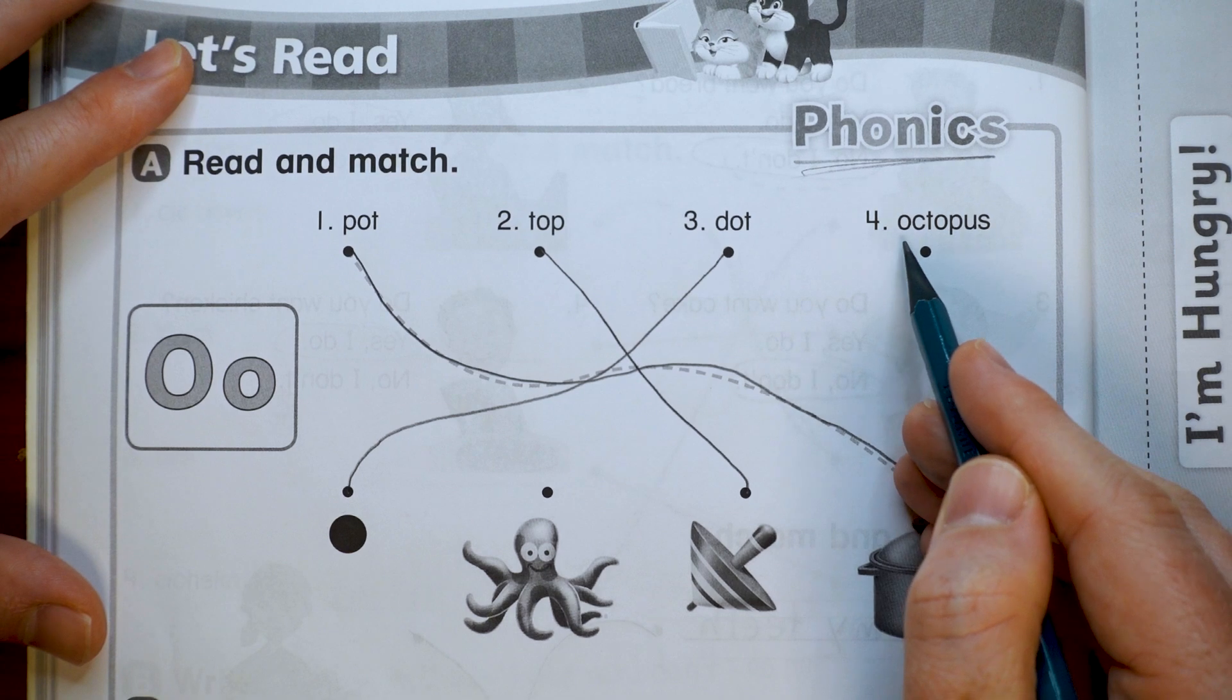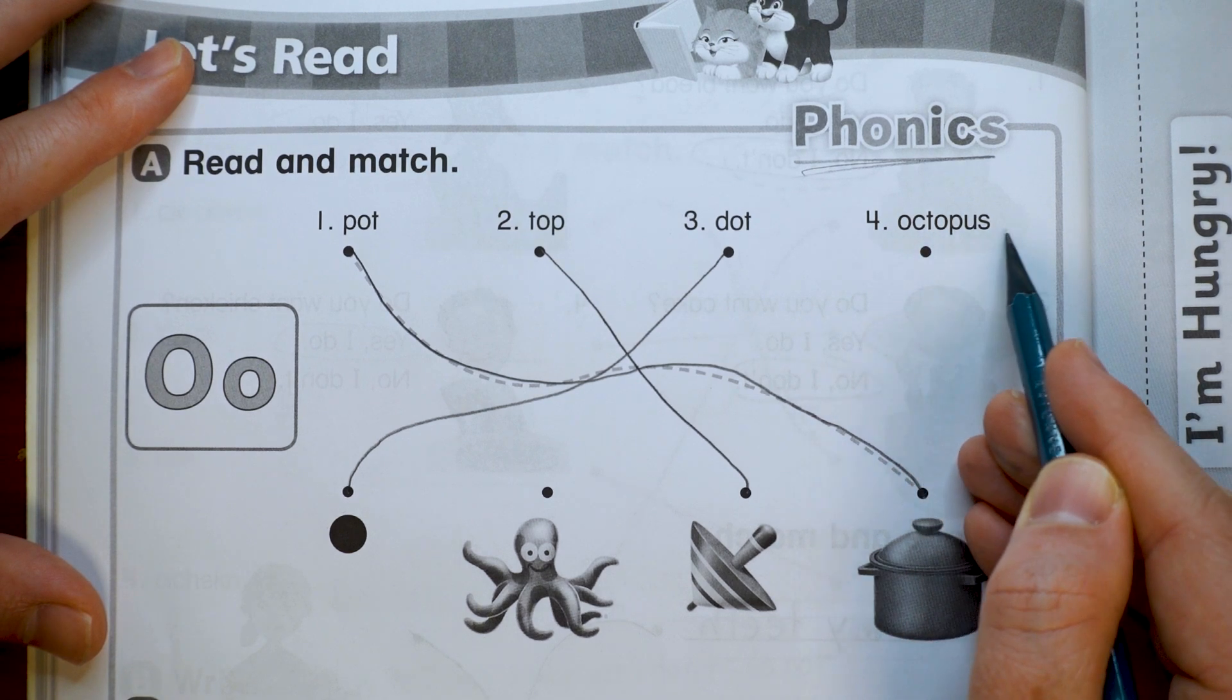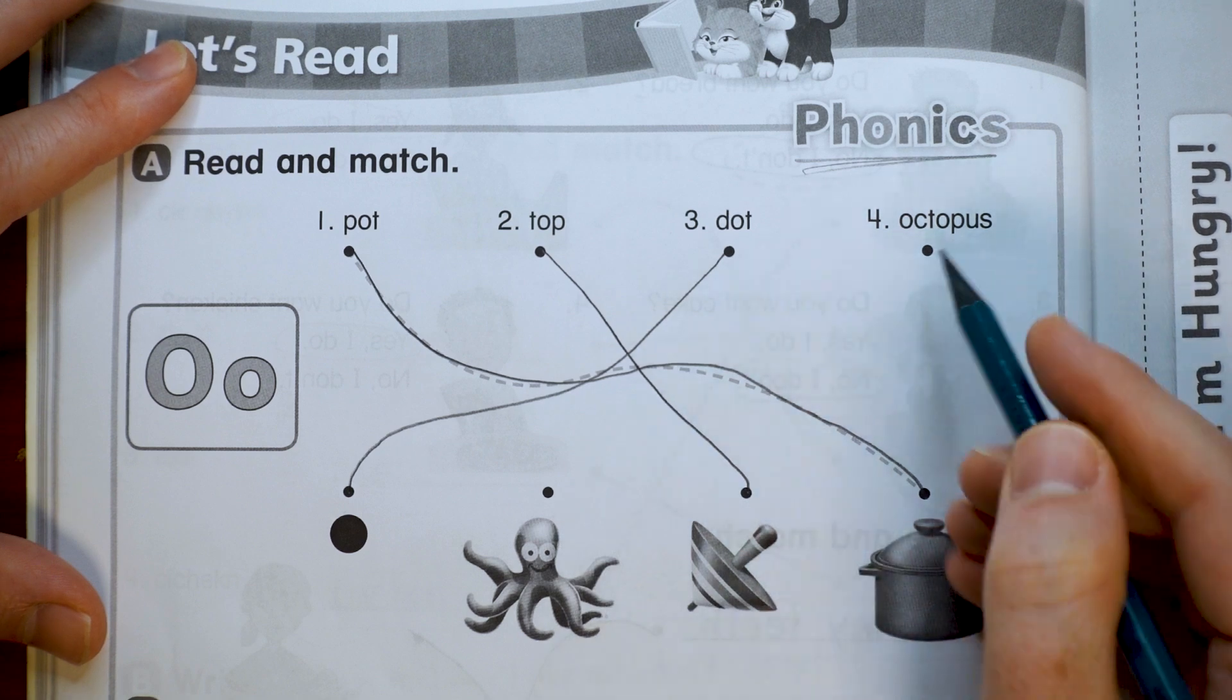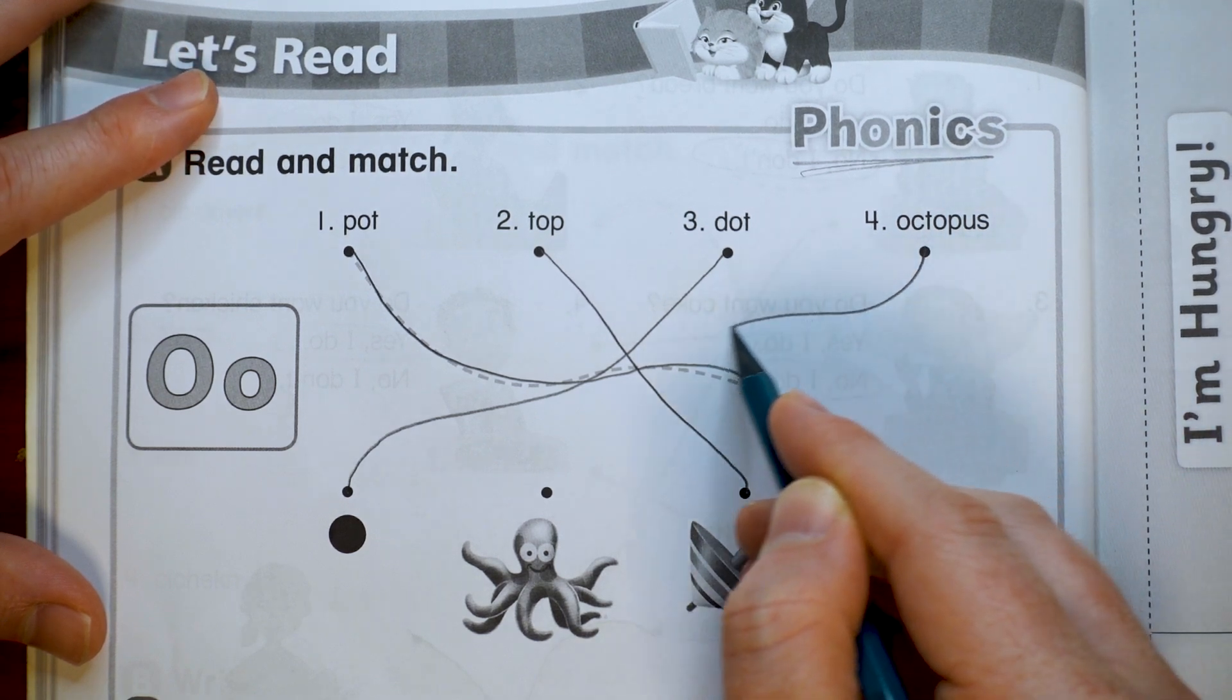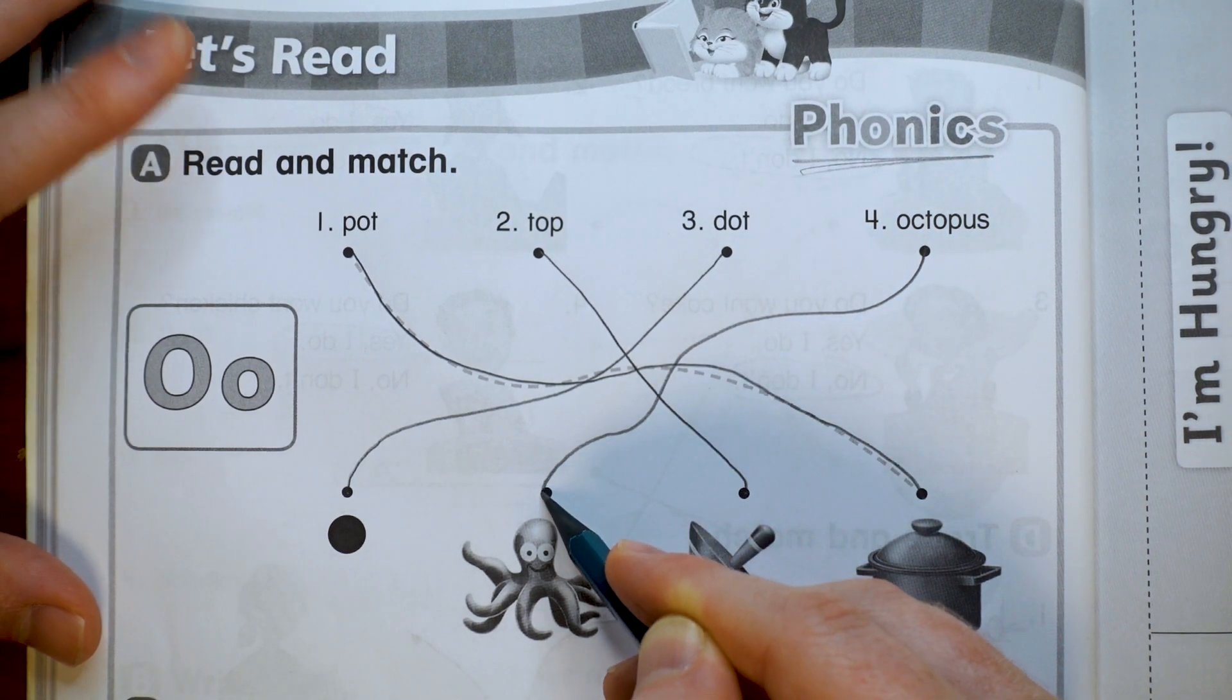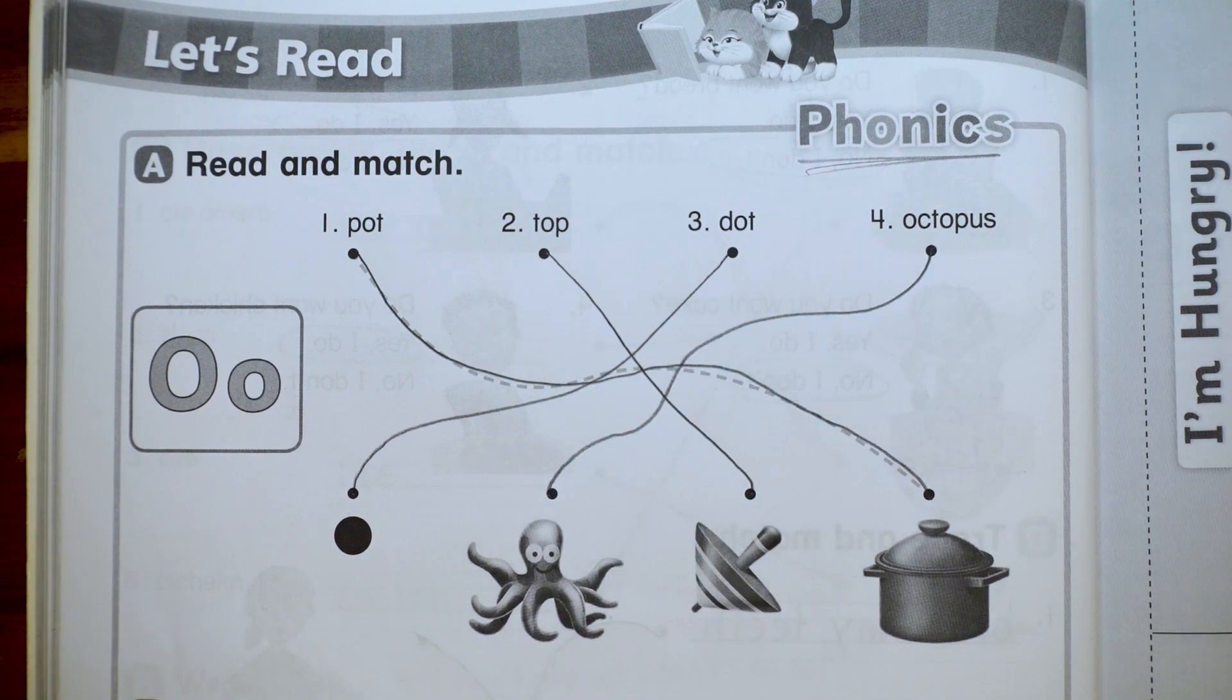Dot - there's a dot, it's a circle so we put on top of an i. Octopus - there's an octopus, a very smart ocean animal. Part A is done, let's do part B.